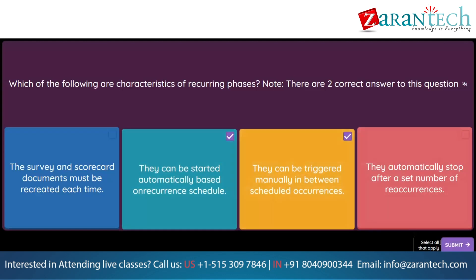Question. Which attributes of importance should be considered when creating a scoring structure within a survey? Note, there are two correct answers. Option 1: The value defines a question's relative importance within a section. Option 2: Team graders can adjust the value while reviewing responses. Option 3: The total of all importance values must add up to 100. Option 4: Acceptable values range between 0 and 10.